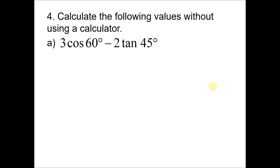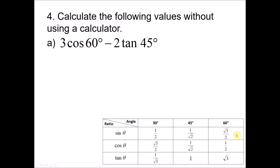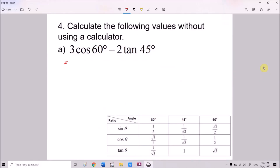Question 4: Calculate the following values without a calculator. For part A: 3cos60° − 2tan45°. Referring to the trigonometric ratio table for 30°, 45°, and 60°, cos 60° = 1/2 and tan 45° = 1. So: 3 × (1/2) − 2 × 1 = 3/2 − 2 = −1/2.